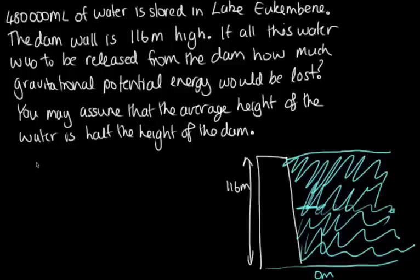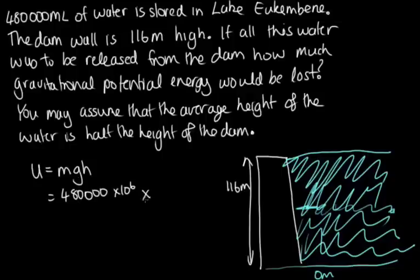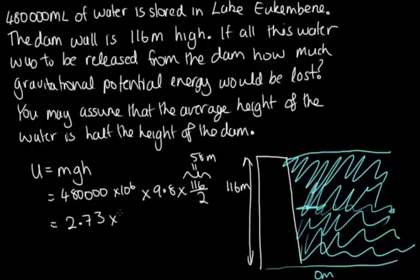To calculate the change in gravitational potential energy we use U equals mgh. We need the mass of water: 480,000 megalitres equals 480,000 times 10 to the 6 litres, and since 1 litre of water is 1 kilogram, that converts it to kilograms. We multiply by g = 9.8, then by the average height, which is 116 divided by 2 = 58 metres. Entering all this into the calculator gives 2.73 times 10 to the 14 joules.